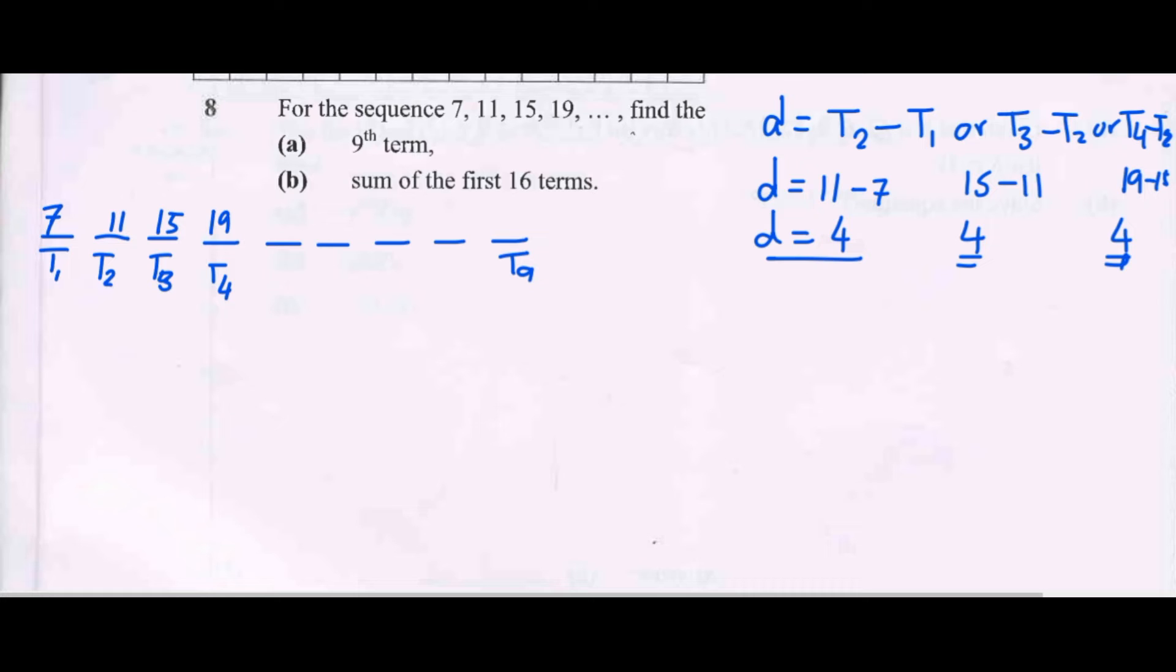So it means to 7, 4 is added to give us 11. Another 4 is added to give us 15. You add 4, 19. Add 4, 23. Plus 4, 27. Plus 4, 31. Plus 4, 35. Plus 4, 39. So that is our term number 9.